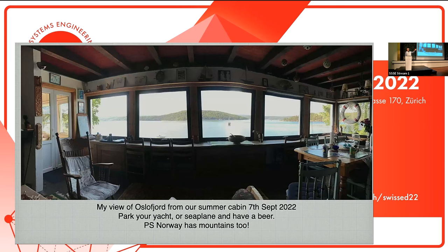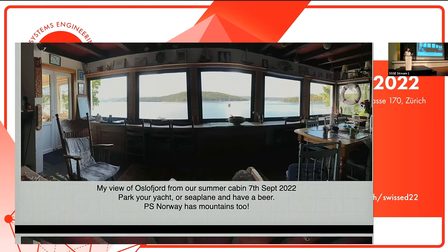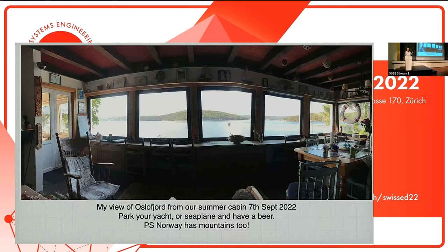I knew I'd see some nice mountains and lakes out there, but I come from Norway, and we have some nice mountains and lakes too. I think your water is a lot warmer than our water. But it's lovely here. But this is where I would be today if I wasn't here. This is my summer cabin on the Oslo fjord, and it just has this fantastic view of the fjord and the islands.